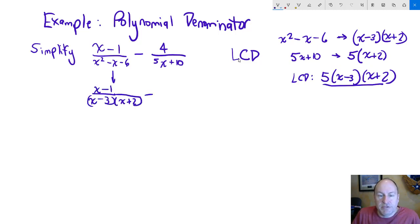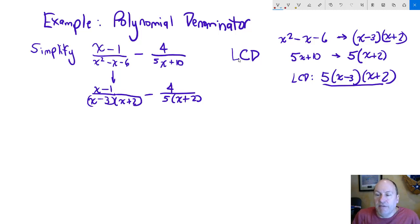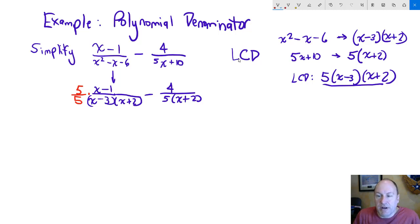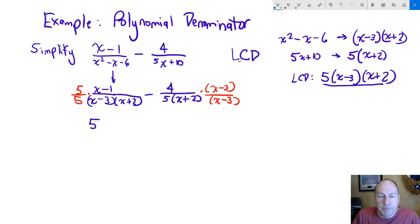Now we multiply each numerator and denominator by the factor that completes the least common denominator. The first denominator x minus 3 times x plus 2 is only missing a 5, so we multiply the first fraction's numerator and denominator by 5. The second denominator is missing an x minus 3 term, so we multiply the second fraction by x minus 3. We then distribute: 5 to x minus 1, and 4 to x minus 3. Notice that negative times negative gives a positive, so negative 4 times negative 3 becomes plus 12.